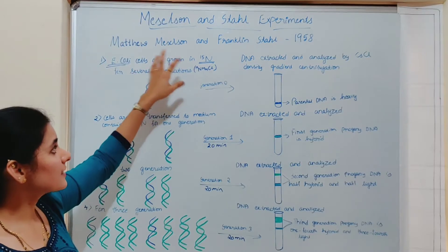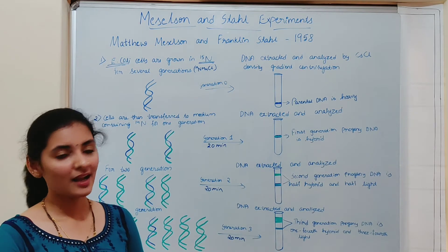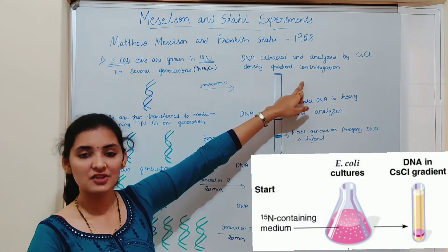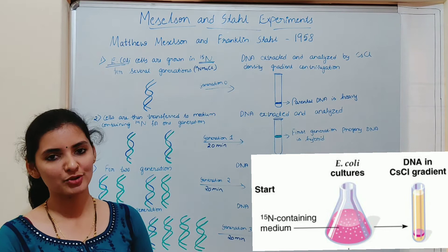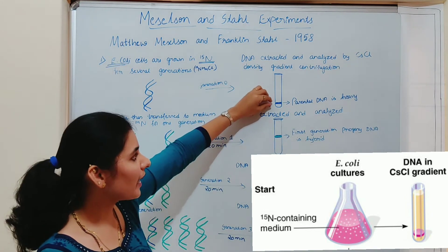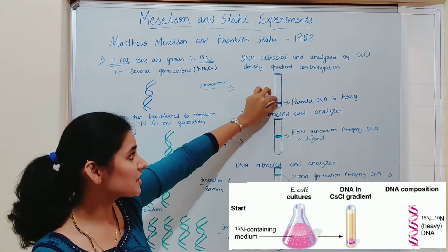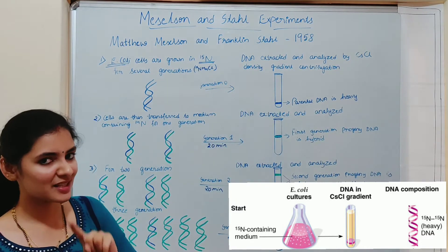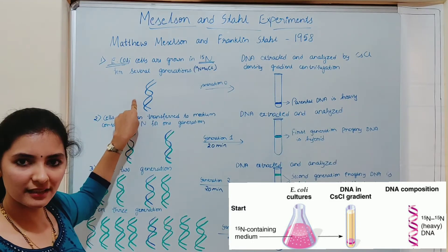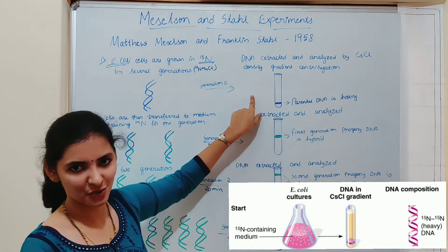Meselson and Stahl selected some of this E. coli, extracted the DNA, and subjected it to density gradient centrifugation. After centrifugation, they observed the centrifuge tube under UV light. They got a band of DNA at the bottom of the centrifuge tube, suggesting that the DNA in the band is heavy — because it had incorporated N15. This matched the expected experimental result.